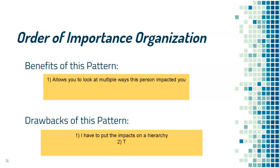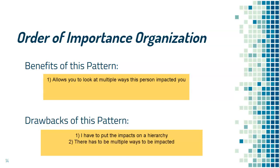The other thing too is there has to be multiple ways to be impacted. If I just wanted to talk about my grandmother's mental strength because her physical strength had no impact on me whatsoever, then I would not use this. If I only wanted to talk about my grandmother's mental strength — if I only have one way that she impacted me — then I would not use this pattern.